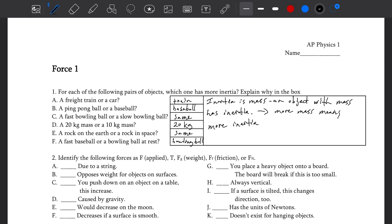Identify the following forces as applied, tension, gravity, friction, or normal. So, due to a string, it's tension. Opposes weight for objects on a surface? Normal. You push down on an object on a table, this increases? Normal.